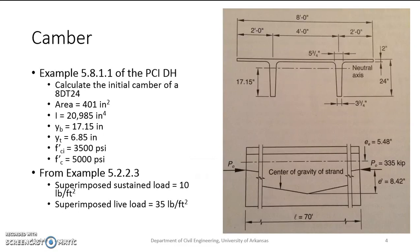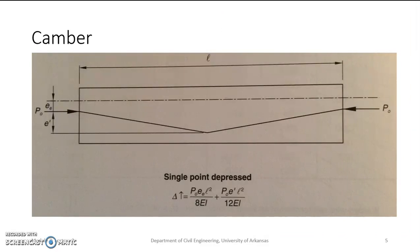So let's look at an example. This is example 5.8.1.1 from the PCI Design Handbook. We get some information from 5.2.2.3 from the Design Handbook. It's a double T with a compressive strength of 3,500 at release and 5,000 psi as a 28-day strength. So we want to calculate the initial camber - when we just cut the strands, how much camber do we have in our girders.